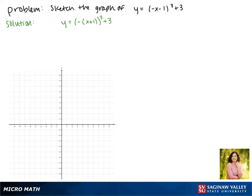Now let's look at the parent function, which is y equals x cubed. Notice that it passes through the point zero zero.